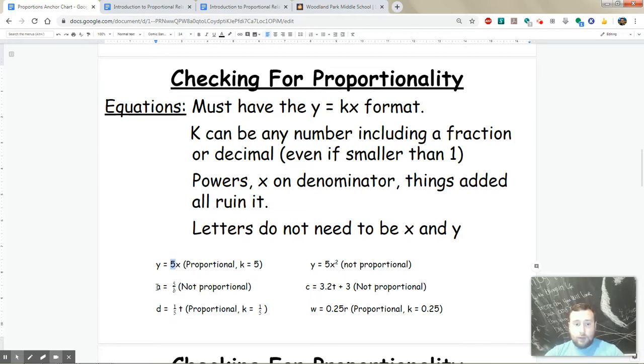What about this one? a equals 5 over b. Not proportional because that b is in the denominator, so it breaks the rule. How about d equals 1.5t? You have two letters on either side of the equal sign and a number, even if it's a fraction, right next to the letter. So yeah, that works. k is 1/5 in this case.